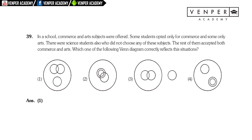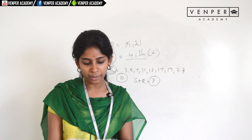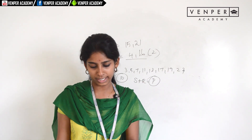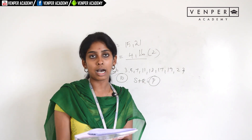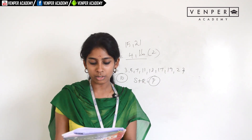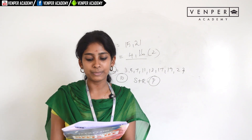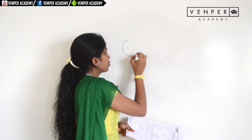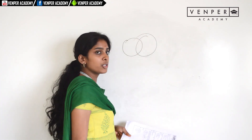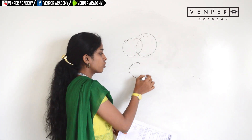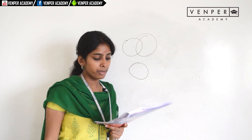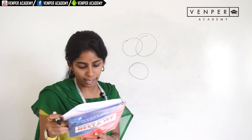Question thirty-nine: science students did not choose any of the other subjects, while the rest accepted both arts and commerce. Arts and commerce are interrelated, but science is separate. This situation is shown by the Venn diagram in option one.